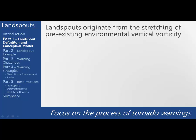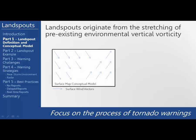Let's take a look at the conceptual model of how landspout tornadoes form. The surface map shown here has surface wind vectors represented by the blue arrows. From left to right you can see there is a sharp change in the surface winds which identifies a surface boundary. Taking out the north-south component of the surface winds represented by the gray arrows, when we bring these components together, you can see that right along the boundary there is both convergence and horizontal shear.